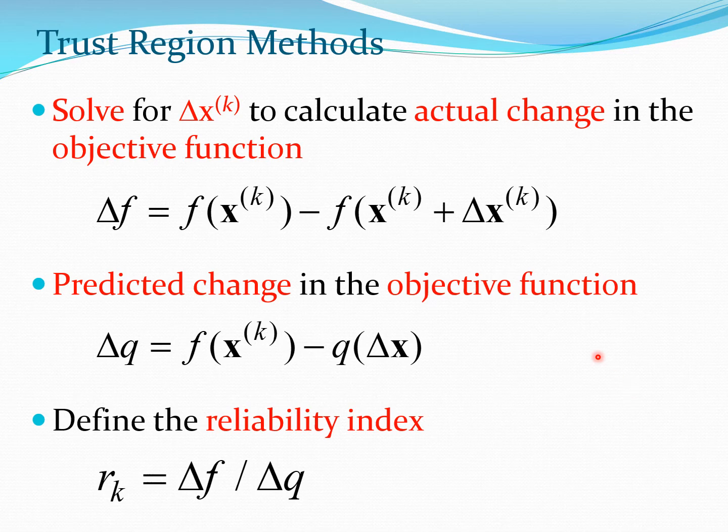So we solve for delta xk to calculate the actual change in the objective function. So now the actual change in the function f is delta f which is the change from function value at xk to the value at xk plus delta xk. Now since you are minimizing this function the value at the second point which is xk plus delta xk is going to be lower than this value at f. So essentially this is going to be a positive number.